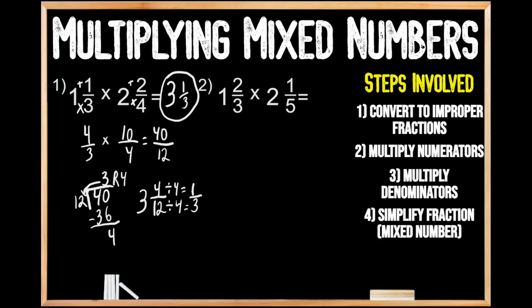We're going to begin with the same step as before: multiply the value of our denominator by the value of our whole number. We know 3 times 1 gives us 3, then we add on the remaining 2 parts for our numerator, and 3 plus 2 gives us 5 for 5 thirds. Now converting our second mixed number: 5 times 2 gives us 10, plus the remaining 1 for our numerator gives us 11, for 11 fifths.